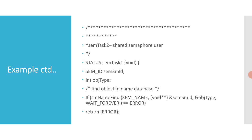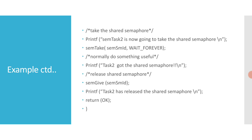To summarize the example: task one creates the shared semaphore, grabs it, holds it for a while, does something useful, then releases it. Similarly, task two uses the object type to find the object in the name database, takes the shared semaphore, does something useful, and then releases the shared semaphore. This is how shared semaphores work.